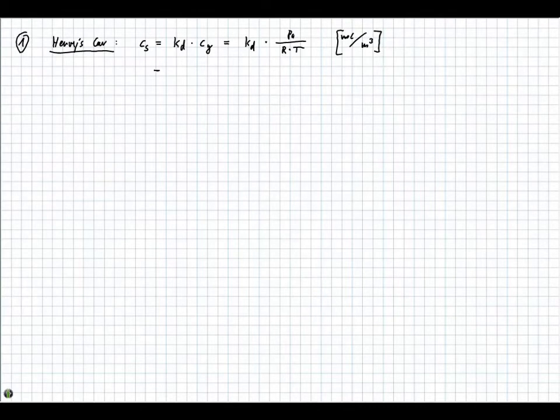So if we fill in, we need to find a couple values. First of all, the Kd value. This can be found on the formula sheet for oxygen at 10 degrees Celsius, and this value is 0.041.